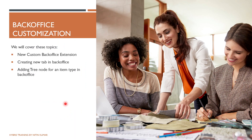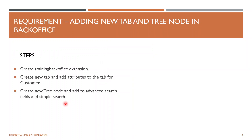In this particular lecture we will be covering how we can customize our back office. There are three functionalities we will be covering: first, creating a custom back office extension; second, creating a new tab for a particular item type; and third, adding a tree node into the left side of the back office for a particular item type.